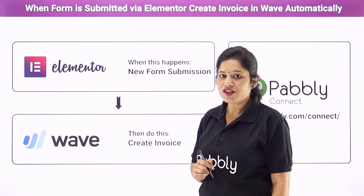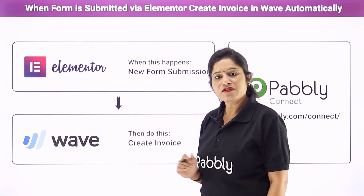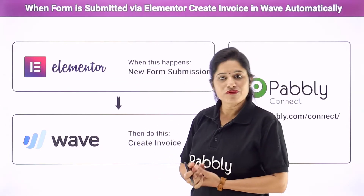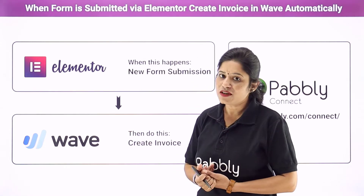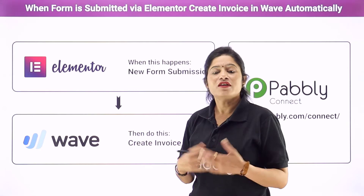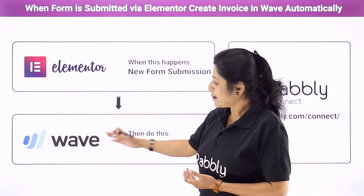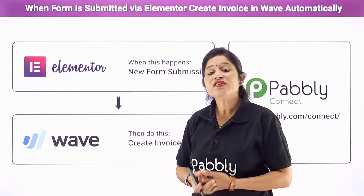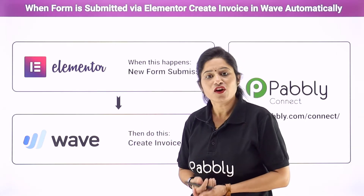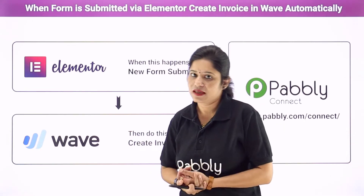In this particular automation, we are using two software applications. The first one is Elementor Forms, which is a form building software application and it is a plugin of WordPress. In place of Elementor Forms, we can also use Gravity Forms, Paper Forms, Contact Form 7, or any other form building software. The second application we are using is Wave, which is a business accounting software. In place of Wave, we can also use FreshBooks, QuickBooks, Zoho Books, or any other business accounting software.